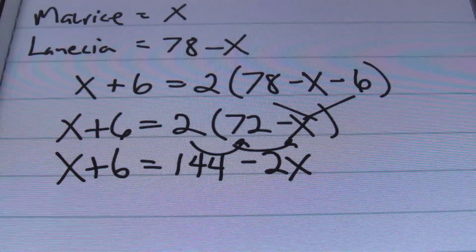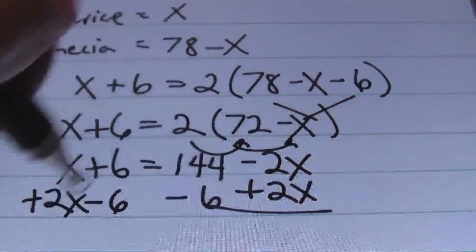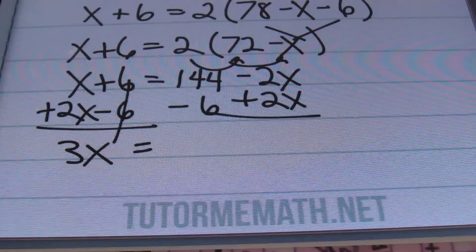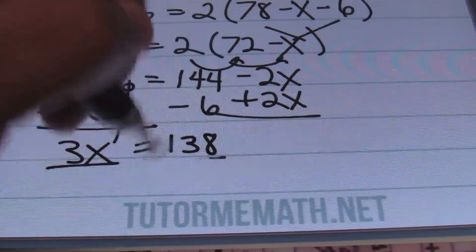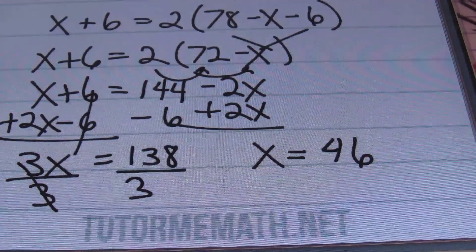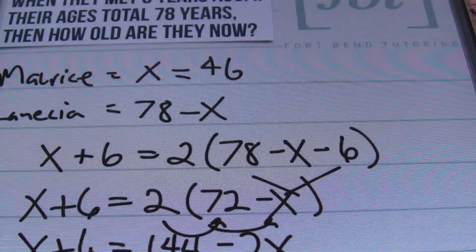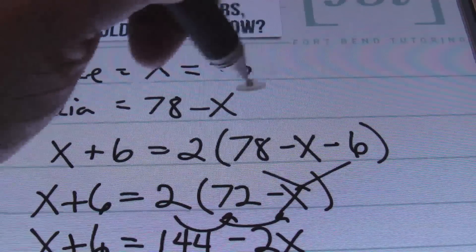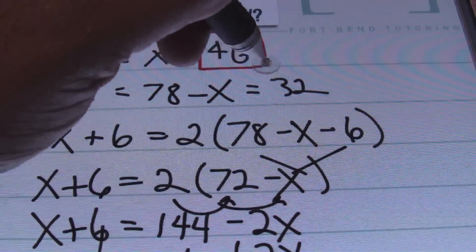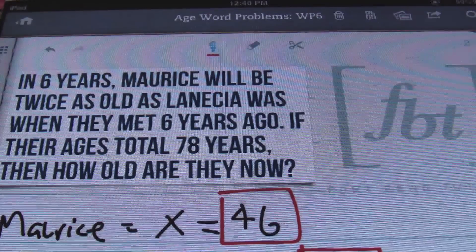From there, we're going to add two x to both sides, and subtract six from both sides of the equal sign as well. This gives me three x on the left side, which now equals one hundred forty-four minus six, which is one hundred thirty-eight. Dividing both sides by three, we find that x equals forty-six. So Maurice is forty-six. Then seventy-eight minus forty-six tells us LaNicia's age, which is thirty-two. Maurice is forty-six years old and LaNicia is thirty-two years old — and notice these two ages add up to seventy-eight. That is problem number two.